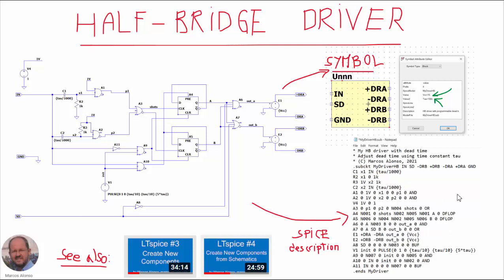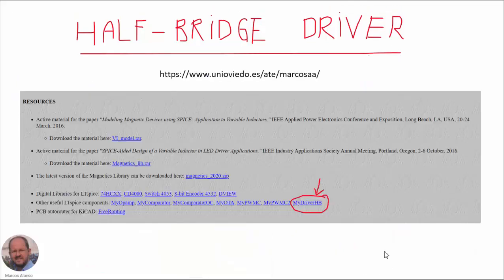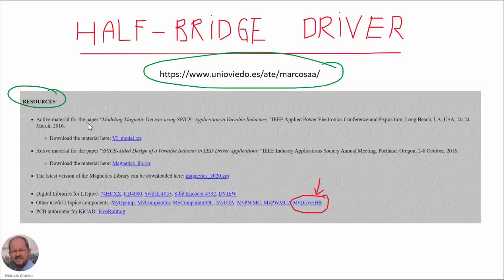From this schematic, we can now create both items needed for our new component: the symbol for our component, which has two parameters, VCC and tau, to adjust the gate voltage and the dead time of our driver. From the schematics, we also need to create the file containing the SPICE description of our circuit. If you are not sure about how to do this process, we have seen this methodology in previous videos — I recommend you see LTSPICE number 3, how to create new components, and LTSPICE number 4, how to create new components from schematics. If you want to save time, you can visit my web page, where you have this new component, my driver for half-bridge inverters.